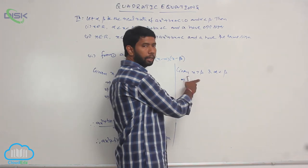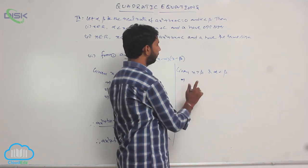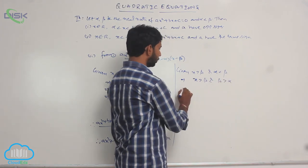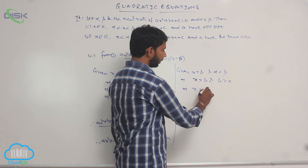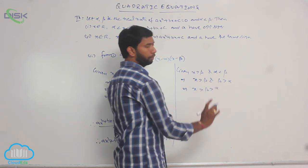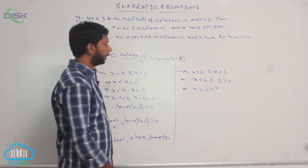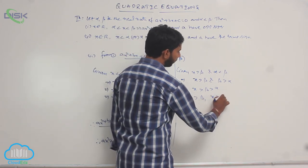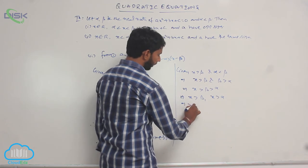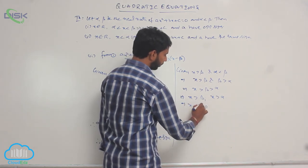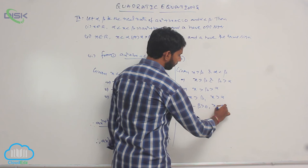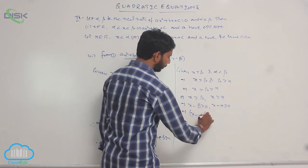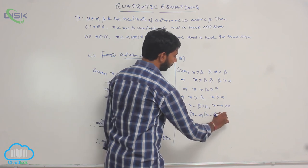Case 2: Given x greater than β and α less than β — that is, x greater than β and β greater than α. Combining these two conditions: x greater than β, x greater than α. Therefore, x minus β is greater than 0 and x minus α is greater than 0.